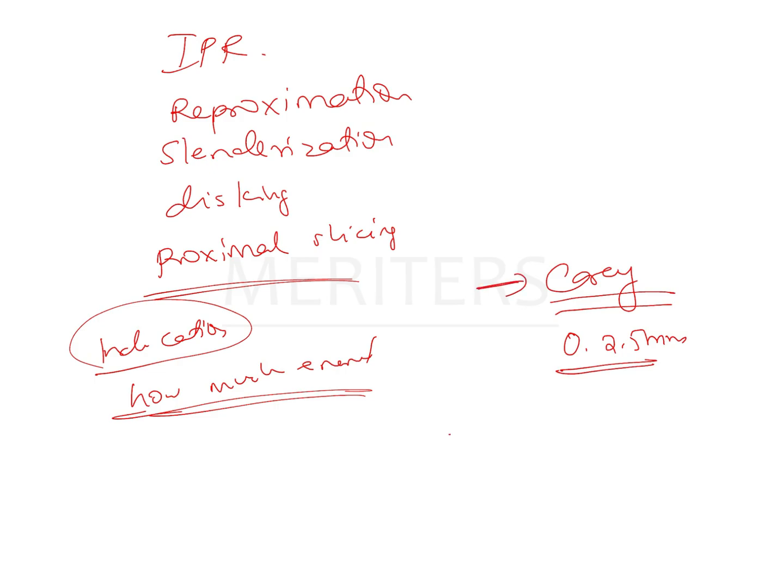Another model analysis that can be done is the Bolton's analysis. The Bolton's analysis helps us to identify which arch has the discrepancy. It tells us the total tooth material as well as the anterior ratio.